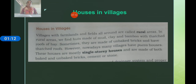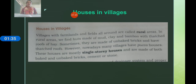We call villages a rural area and cities an urban area. In rural areas, we find houses made of mud, clay, and bamboo with thatched roofs of hay. Sometimes they are made of unbaked bricks and have thatched roofs. In every village there are different types of houses.